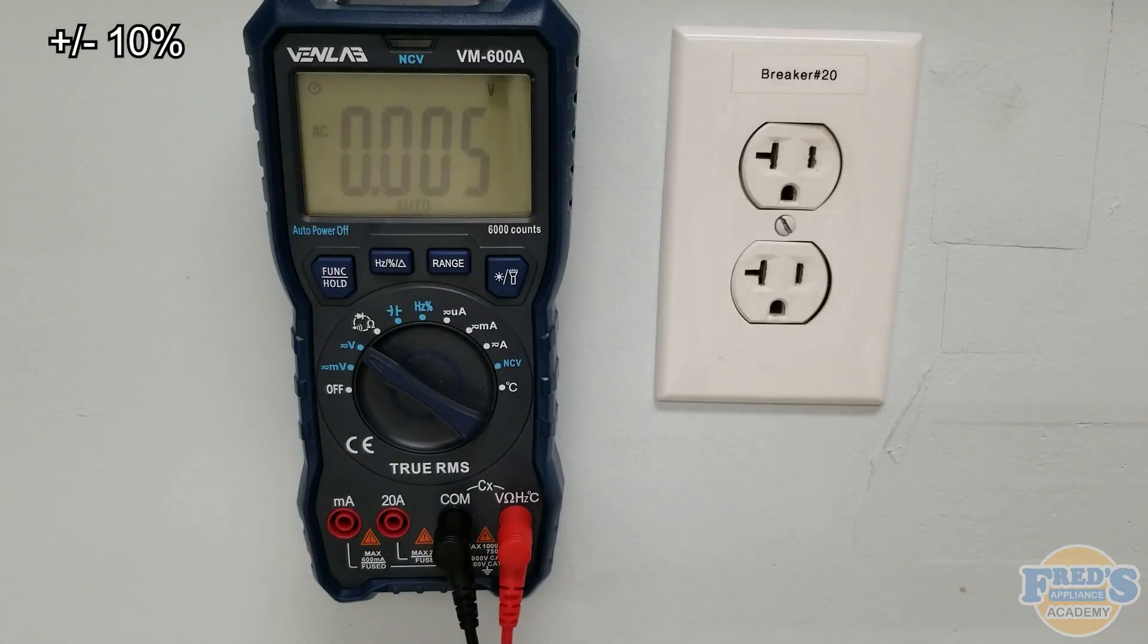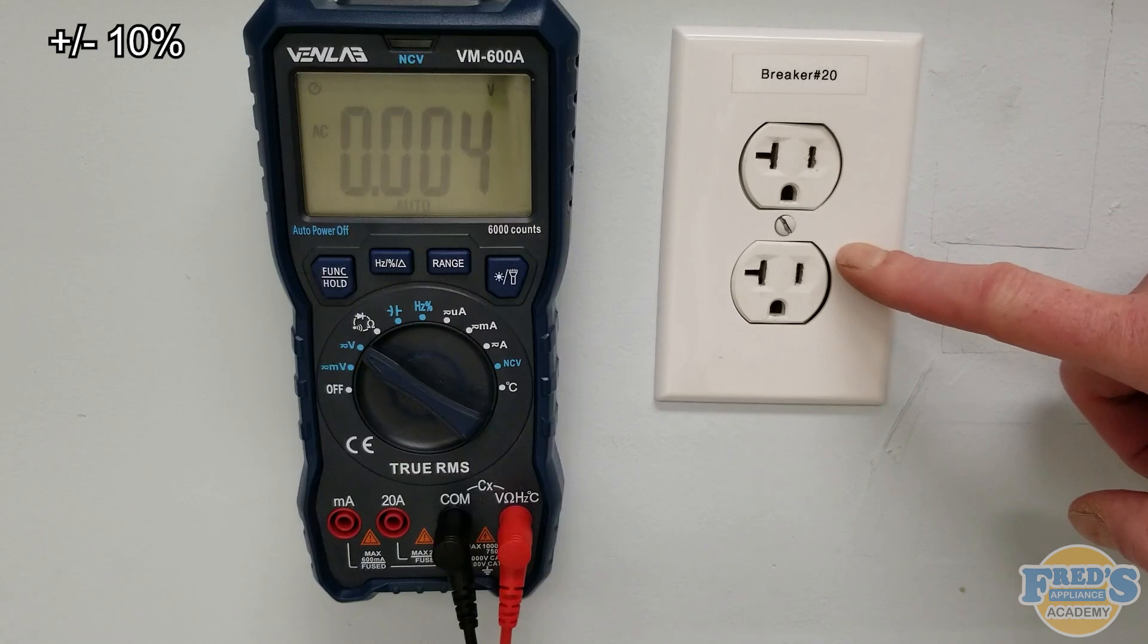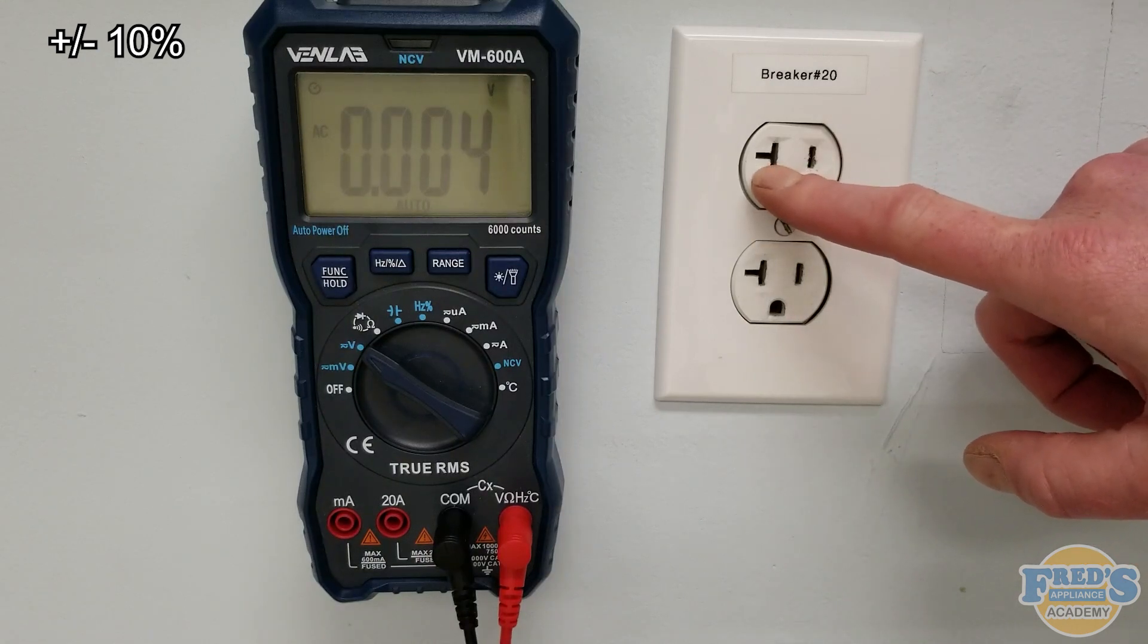To give you a better example, here we have a 120 volt outlet. This one is rated for 20 amps and we can see that by the little slot in the neutral.